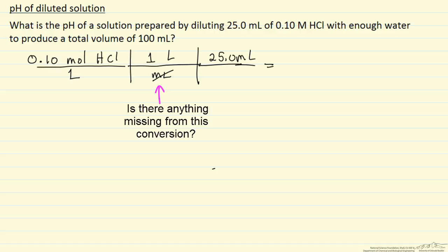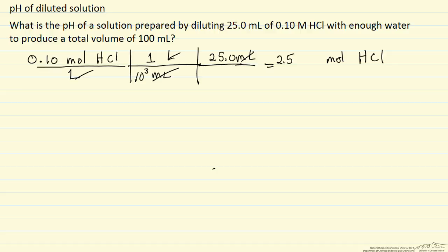If we look at units what we are calculating now is the moles of HCl. Of course if we multiply 2.5 - oops, what I meant here is 10 to the third mL is equal to a liter, and this is 2.5 times 10 to the minus 3 moles.